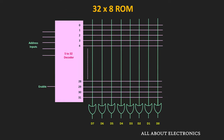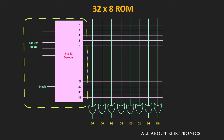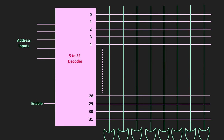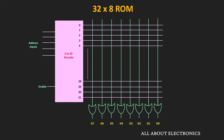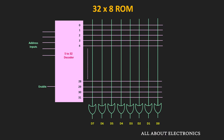This is the internal structure of a 32x8 ROM. This 32x8 ROM consists of 32 words and the word length of each word is equal to 8 bits. With the help of a 5-input decoder, it is possible to select any one of the 32 words. The outputs of the decoder are labeled from 0 to 31, and each output represents a specific memory address. To read the 8 bits of data from each word, we have 8 OR gates, and each OR gate consists of 32 inputs.